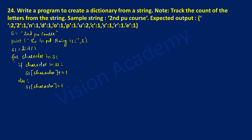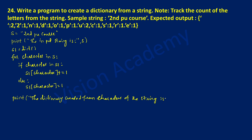Next, aligned with the for loop, I'm going to write a print statement. In a double quotation mark: 'the dictionary created from the characters of the string is', end the quotation mark, and write s1. Now let us execute and see the output.